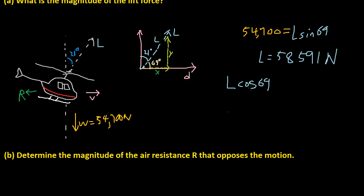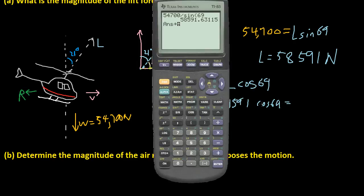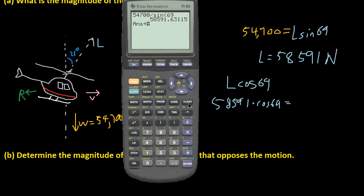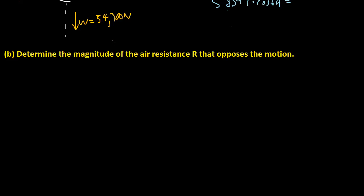The x component of this L vector would be L times cosine of 69, instead of sine of 69, because sine of 69 was y. So this would be 58,591 cosine of 69. If we do that, answer times cosine of 69, that gives us 21,000. So the answer to the second one is 21,000 newtons equals R.